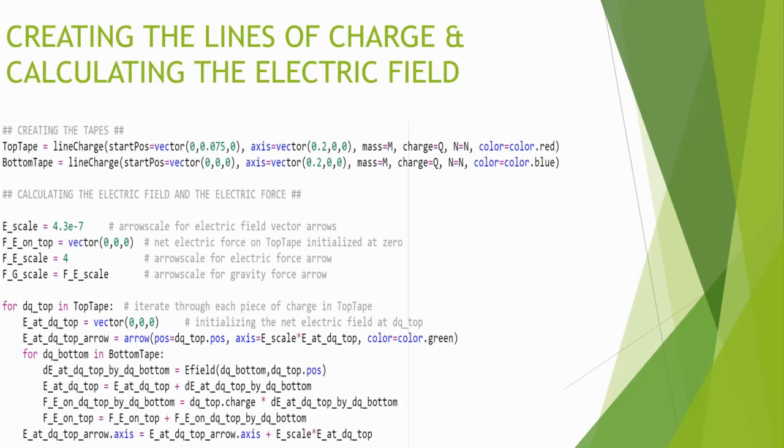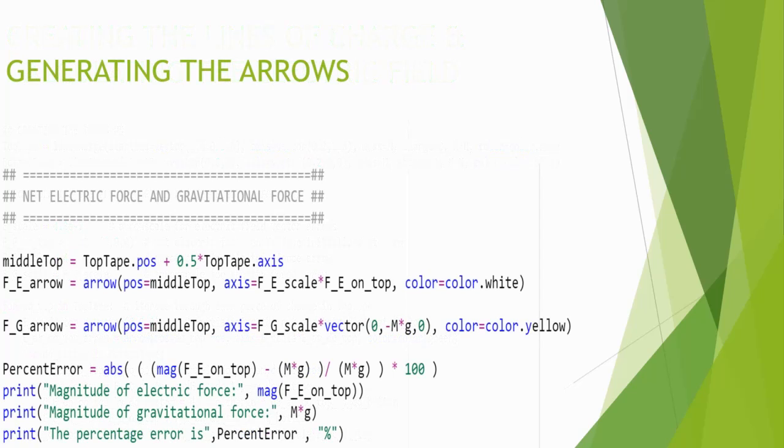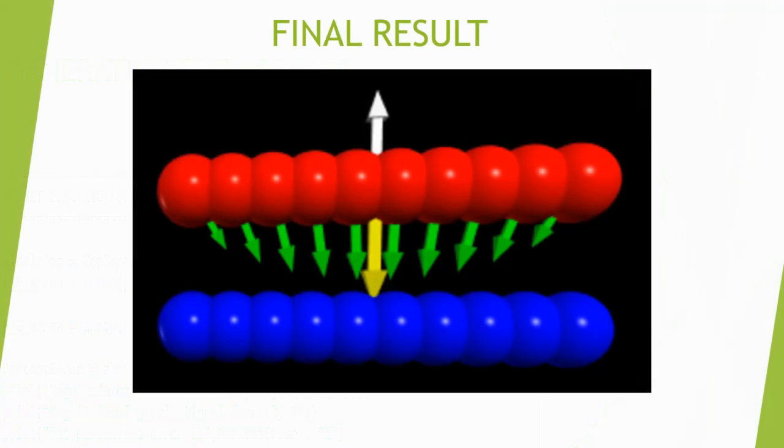Then, by using a for loop, the electric field that each of these charges were calculated, and the overall electric force acting on the top tape was calculated. Finally, the arrows that represented electric force and magnetic force were generated, resulting in a pictorial representation of the forces acting on the system here.